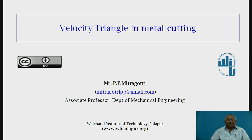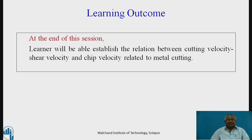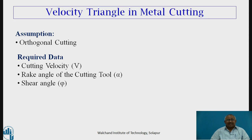So we have to consider the velocity triangle in metal cutting. The outcome of this session will be to establish the relationship between cutting velocity, shear velocity, and chip velocity in terms of rake angle and shear angle. For that, we assume our cutting is orthogonal cutting, and what we require to know is cutting velocity V.